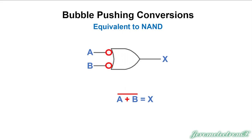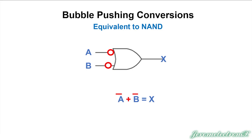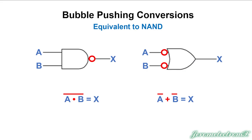Next we push the bubble the rest of the way through. It splits and goes to both inputs. What we've done is changed the line and changed the sign. This is the equivalent of an AND gate. We started with the AND gate, turned it to a NAND gate, pushed the bubbles through, and it became another type of NAND gate made with an OR gate with inverters on both inputs. They equal each other — that's the whole point.